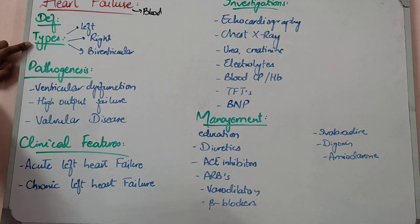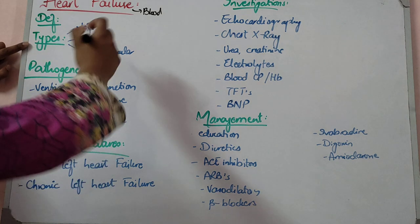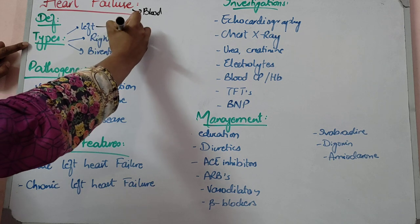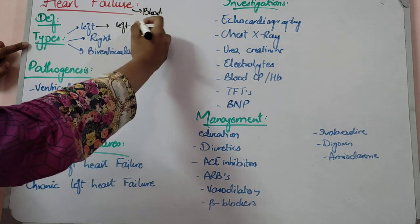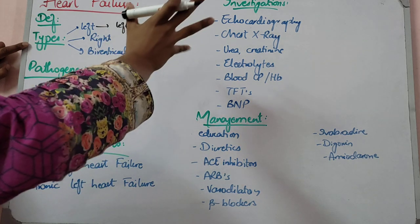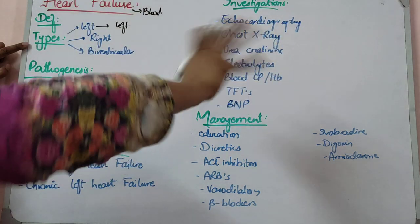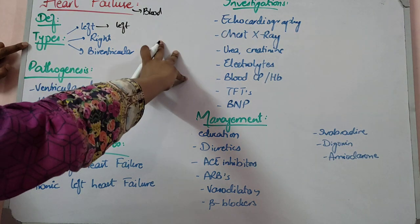Let's see the types. First is left heart failure. The left ventricle has to eject blood through the aorta. If the left ventricle does not contract properly, it leads to left heart failure.